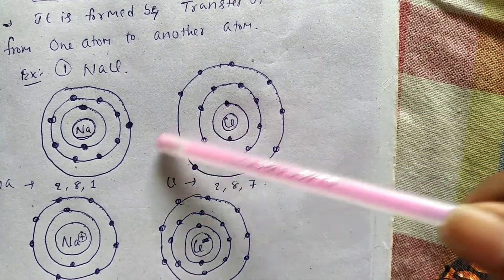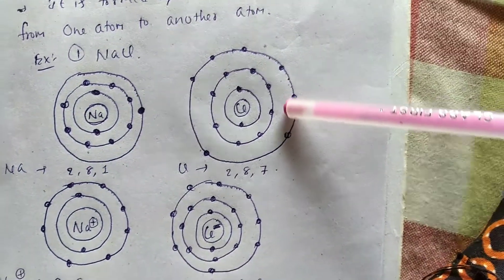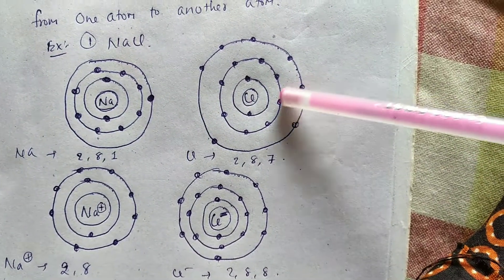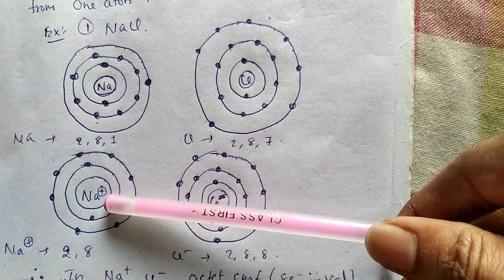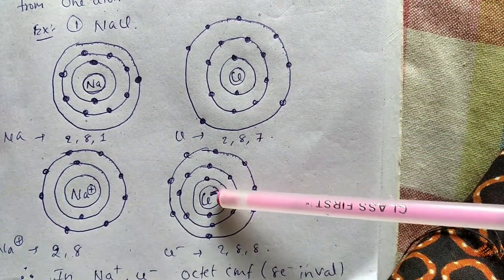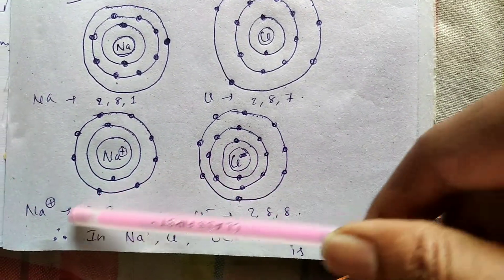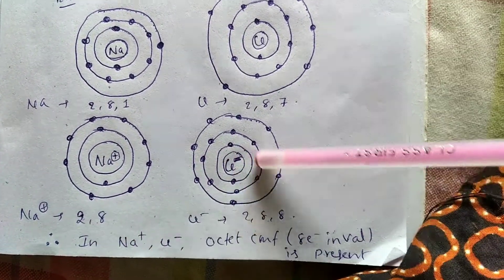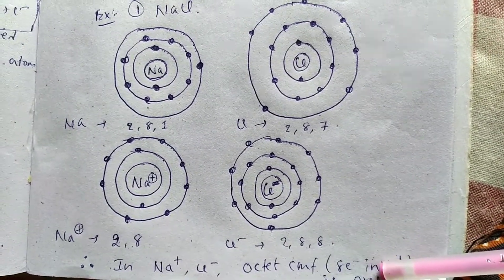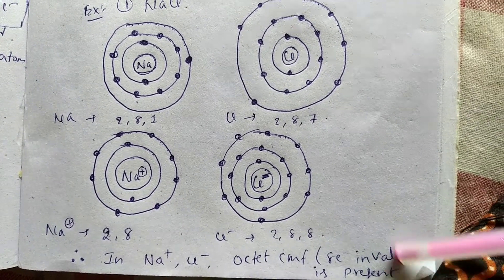That is the reason why Na loses one electron and Cl gains one electron. The electron is transferred from the sodium atom to the chlorine atom. Sodium is then converted to the sodium ion Na+, because it lost an electron. Chlorine is converted to Cl−, because it gained an electron. Electronic configuration of Na+: 2,8; chloride ion Cl−: 2,8,8 — both achieving octet configuration with eight electrons present.